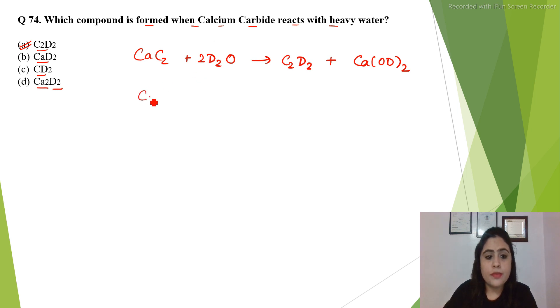Suppose we compare this reaction with water. If this would have been water, then we get C2H2 plus Ca(OH)2, simply as protium. So we are just replacing the protium with the deuterium isotope of hydrogen. Same reaction.